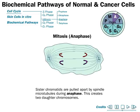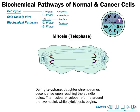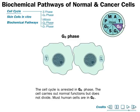The sister chromatids are pulled apart by spindle microtubules during anaphase, creating the daughter chromosomes. Then during telophase, the cytoplasm divides, forming two new daughter cells. The nuclear envelope reforms around the two nuclei while cytokinesis begins, ultimately producing two new offspring cells.